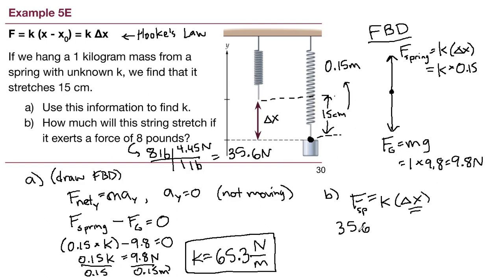If we have 35.6 newtons of spring force and we know that our spring constant is 65.3 for this particular spring, what is our delta x? How much stretch are we going to have?